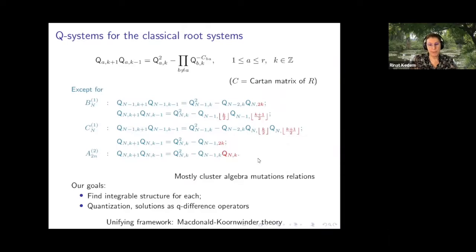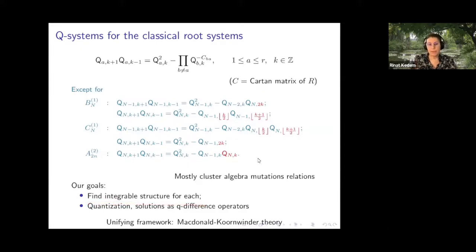The goal is: each one of these Q systems is an integrable discrete evolution, meaning it has rank G conserved quantities which can be written as Laurent polynomials in some initial data. I want to find these conserved quantities and prove integrability. Each one has a quantization, and once it has a quantization I claim there's a functional representation in which the non-commuting elements Q become Q-difference operators. The unifying framework is Koornwinder-McDonald theory.